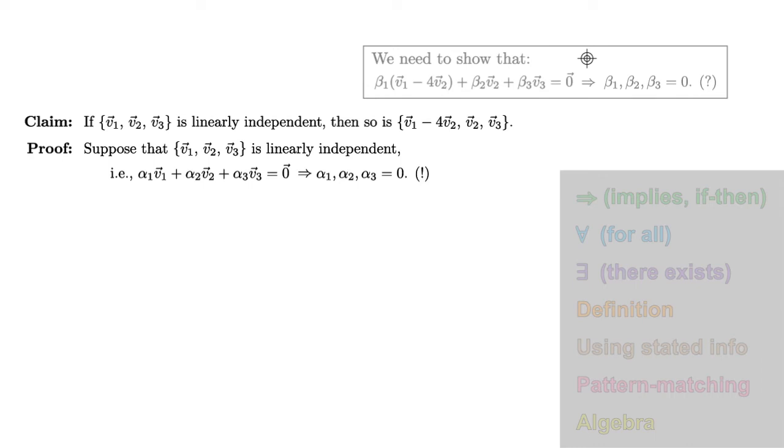Now that we've written out the definition of what we need to show, it tells us what to do next in our proof. Since it's another implies statement, we suppose its hypothesis that beta 1 v1 minus 4v2 plus beta 2 v2 plus beta 3 v3 equals 0. What we now need to show is that beta 1, beta 2, and beta 3 are all 0.